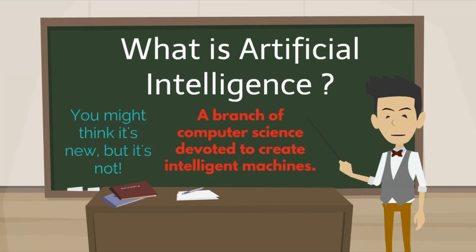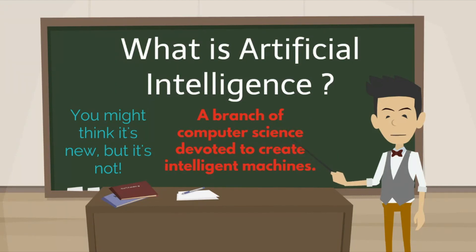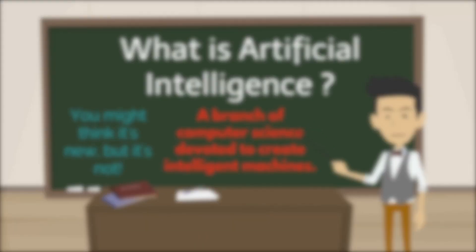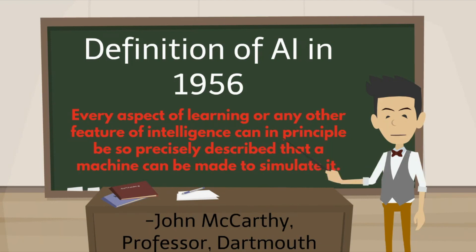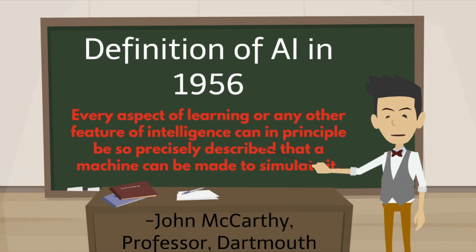Given that everybody is talking about AI now, you would think that it's new, but the underlying techniques are not new, and the field started in the mid-20th century. At that time, the first definition of AI was that every aspect of learning or any other feature of intelligence can in principle be so precisely described that a machine can be made to simulate it.